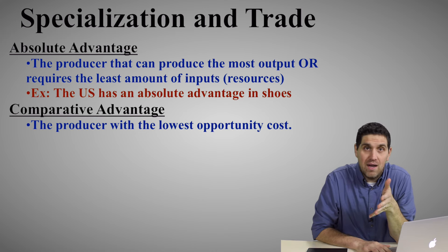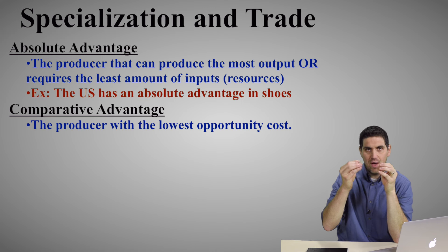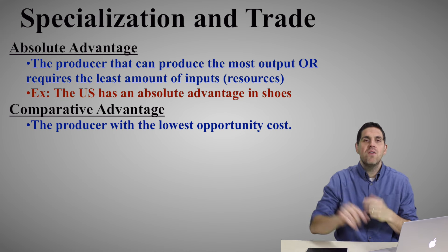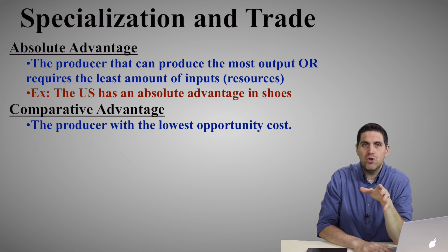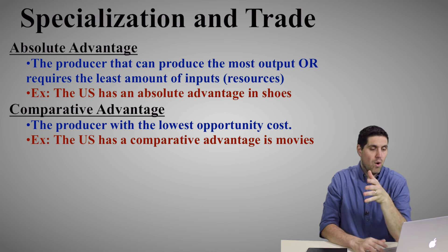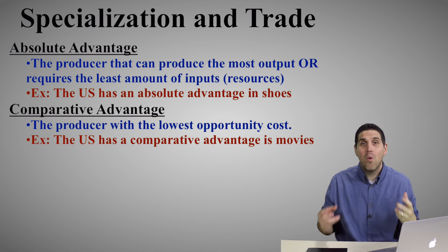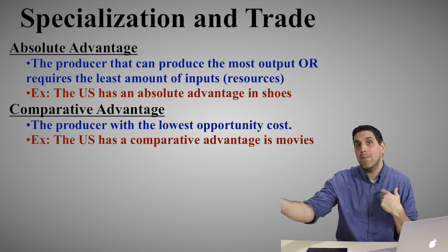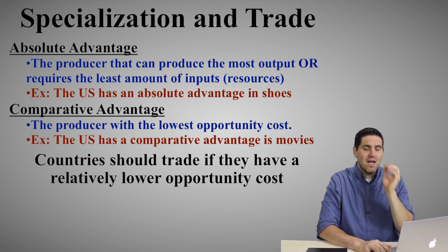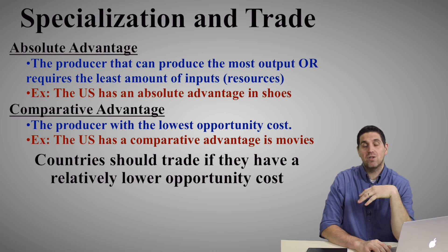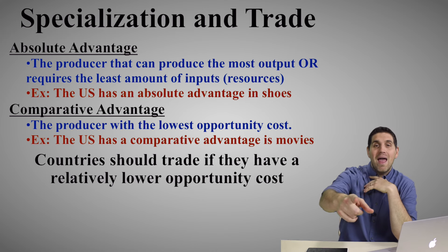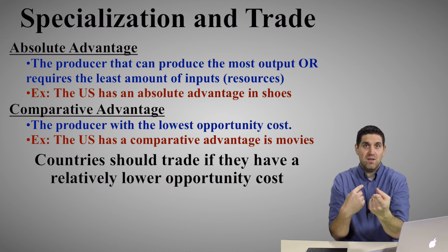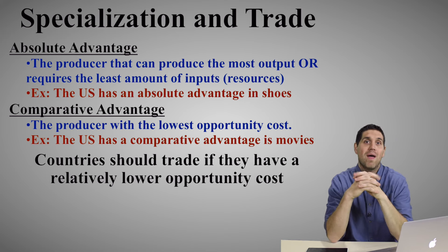Comparative advantage is the idea of having a lower opportunity cost in production. The United States produces very few shoes, but we produce a lot of things like airplanes and CGI movies — we have a lower opportunity cost than another country that can't produce those things. The idea is that countries should specialize and trade when they have a comparative advantage. If you're better at producing something than I am, and I specialize in the thing I'm really good at, we both can trade and both benefit. So I'll trade you the movies, you trade me the shoes, and we both walk away happier.